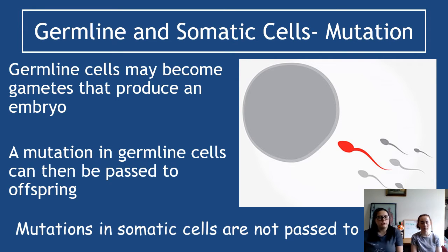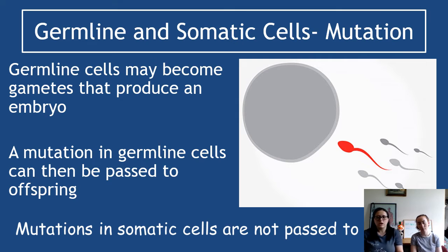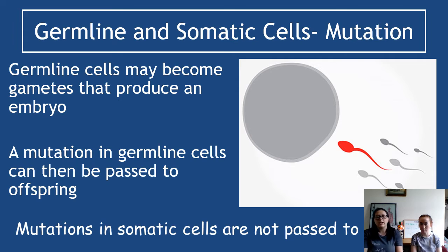Germline cells become cells that produce an embryo - sperm and egg fuse together to produce a zygote, and then an embryo that will become a new living thing. If there are mutations in a germline cell - say the sperm or egg is mutated - that can be passed on to offspring. Mutations in somatic cells, like a skin cell, are not passed to offspring. So if you develop a mole on your arm, your baby won't inherit that exact mole, because it's a mutation in your somatic cells. Only mutations already in the germline cells can be passed on to offspring.